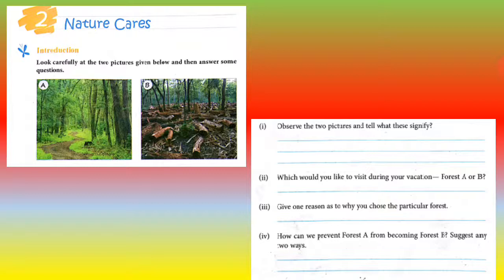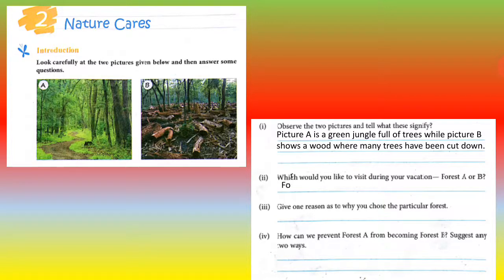Observe the two pictures and tell what these signify. We have seen these two pictures. Now we will try to tell, what is the importance of this? What do picture A and B signify? So, picture A is a green jungle full of trees, while picture B shows a wood where many trees have been cut down. Picture A tells us that a jungle filled with trees is very attractive, and picture B shows that there are many trees cut.